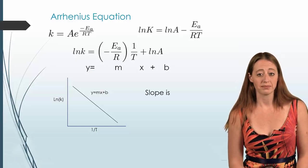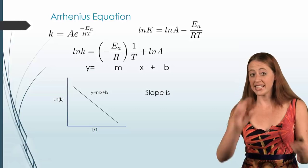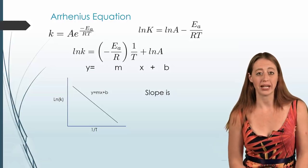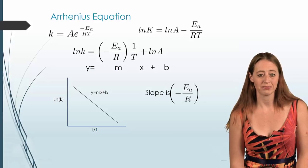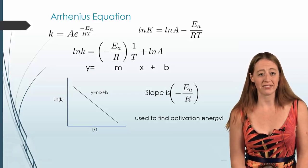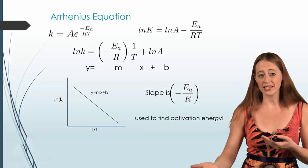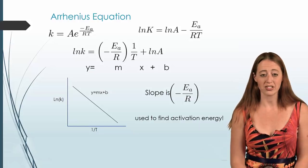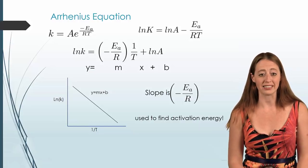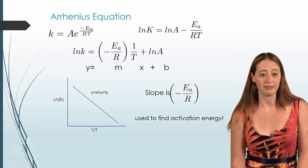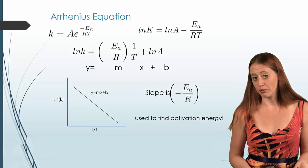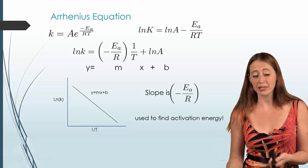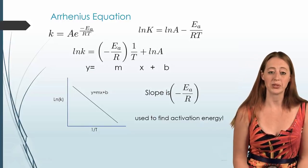Now if you look at this, what's your slope? It's that entire group that I'm calling M, right? So it's negative EA over R. That's your slope. So we can use this to find our activation energy. Because if we graph this, we can simply solve for our slope. Excel can do that very easily. And now we can find EA. So this is typically how you would go about it in a laboratory setting. This might be a really useful video to have on hand when you do that sort of thing.